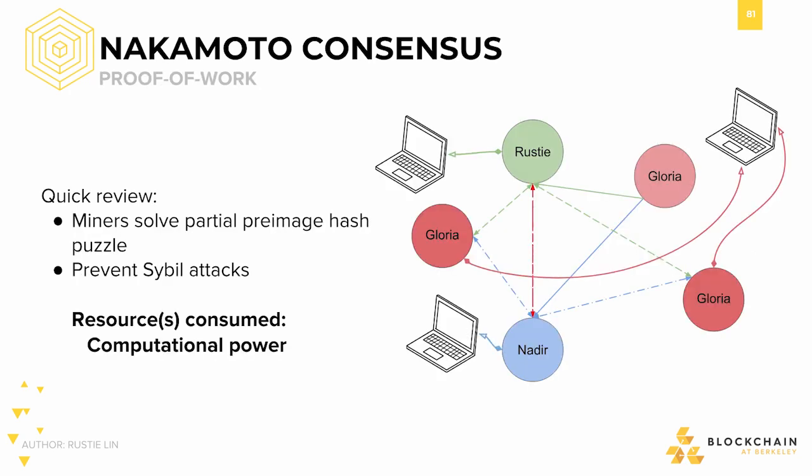First, just as a recap and to understand Nakamoto Consensus in something we already know, take Bitcoin. In Bitcoin, miners solve partial pre-image hash puzzles so as to prevent naive Sybil attacks and to tie voting power to a scarce physical resource. The image on the right-hand side is from our first course, Bitcoin and Cryptocurrencies, and shows exactly that. The miner who solves the block first gets to send it to the rest of the network, who then implicitly votes on that block, since they have the power to choose to append it to their local copies of the blockchain. In proof-of-work, the resource consumed is computational power — the faster a miner can compute hashes, the more likely they are to find the next valid block.